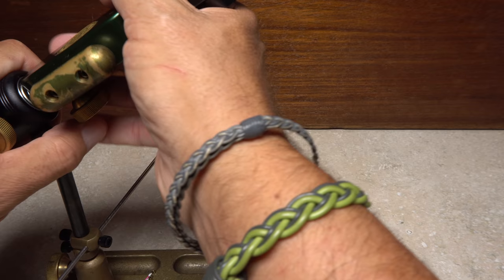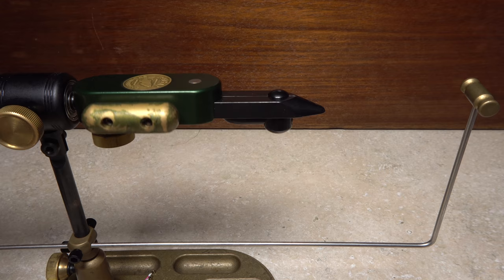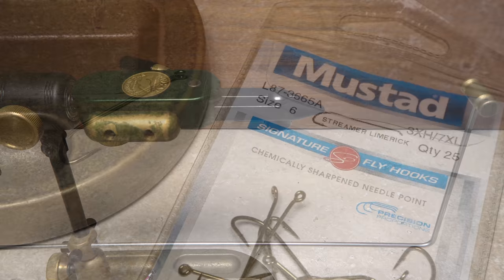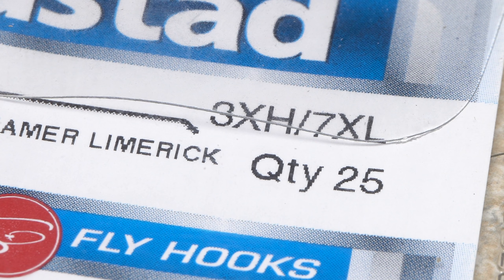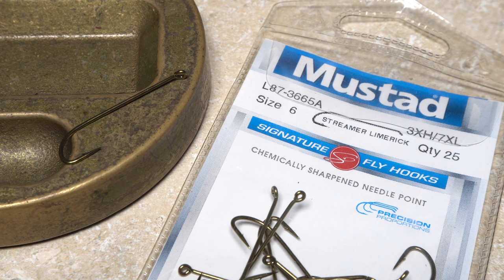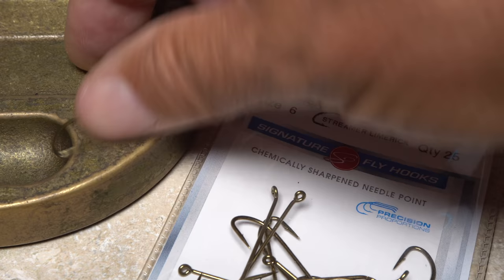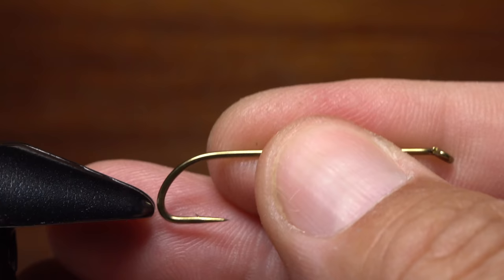When tying the Frankie Shiner and other similar streamers, a rotary vise makes the job much easier, especially when used in conjunction with an adjustable bobbin cradle. For a hook, I'm going to go with a Mustad 3665A, but any streamer hook in the 6 to 8x long range and in sizes 4 to 10 will work just fine.